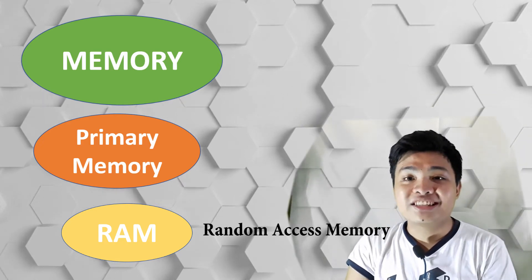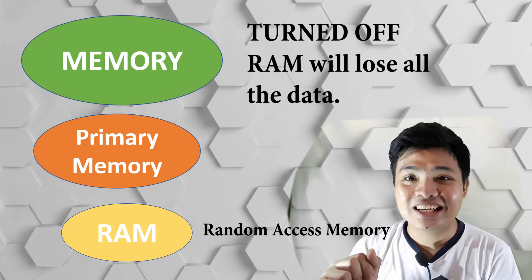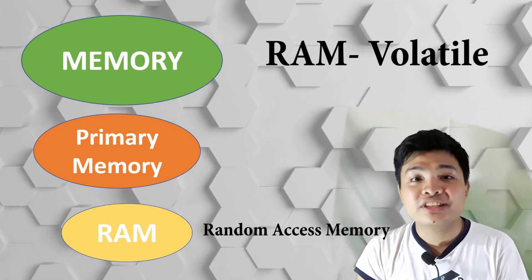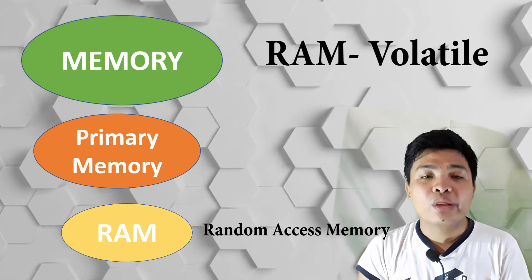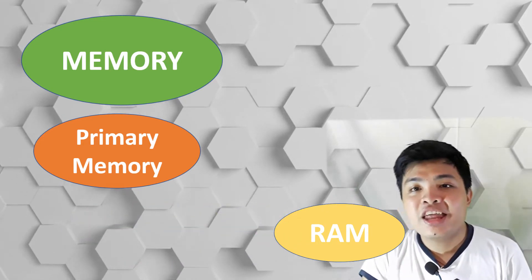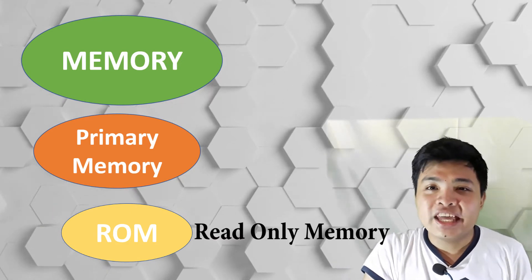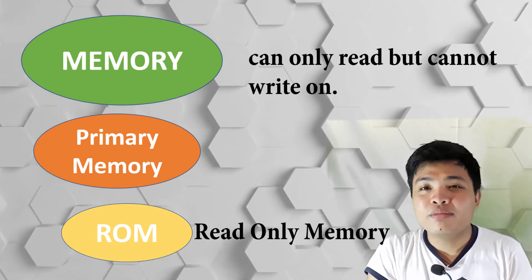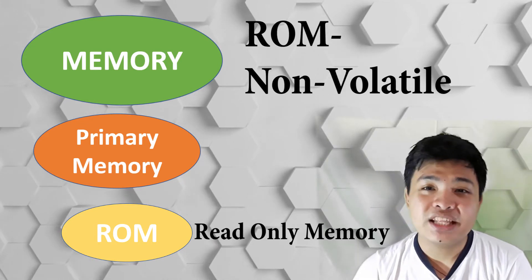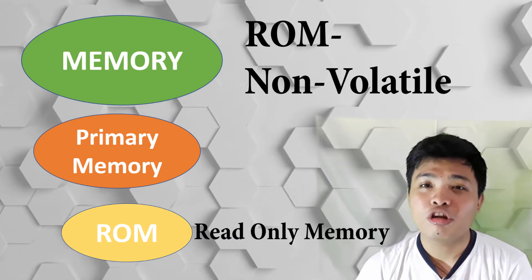If the computer gets turned off, RAM will lose all its data. RAM is volatile, meaning it holds data when the power is on; when the power is off, RAM's contents are lost. Next is ROM, or Read-Only Memory. It is the memory which we can only read but cannot write on. ROM is non-volatile, meaning it holds data even when the power is on or off.